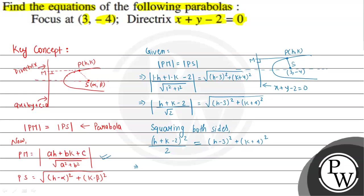Expanding the left side using (a plus b plus c) squared formula: h squared plus k squared plus 4 plus 2hk minus 4k minus 4h. Expanding the right side: (h minus 3) squared gives h squared plus 9 minus 6h, and (k plus 4) squared gives k squared plus 16 plus 8k.